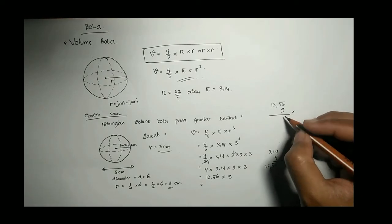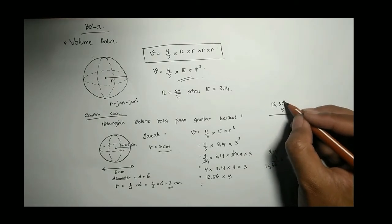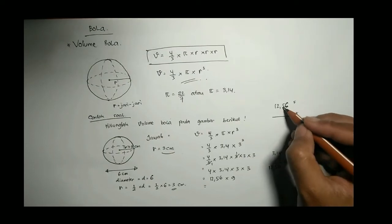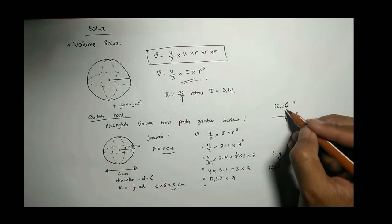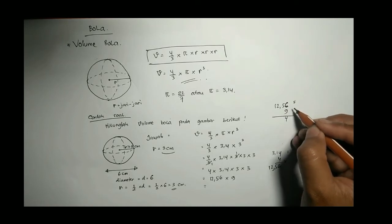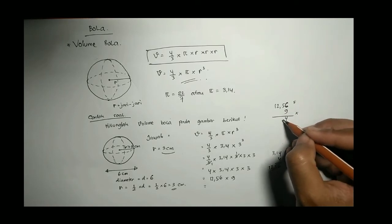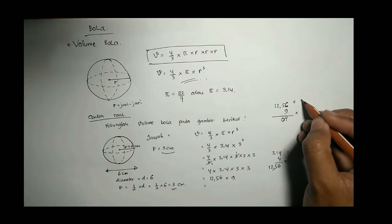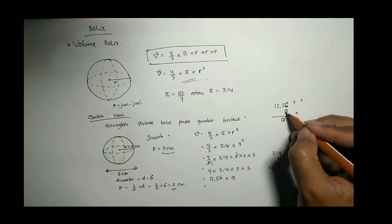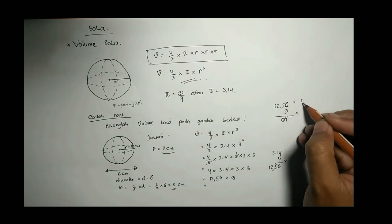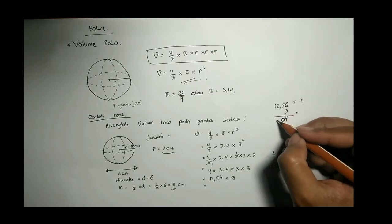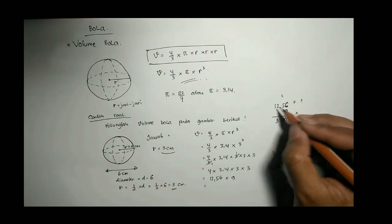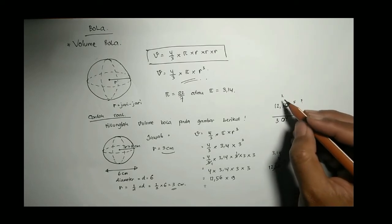54 ya, tulis 4 nyimpan 5. 9 kali 5, 45 tambah 5, 50. Tulis 0 nyimpan 5 lagi.